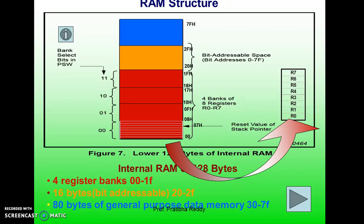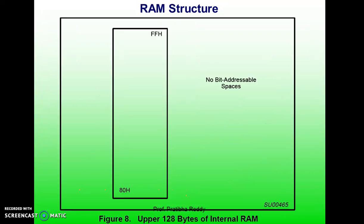In the 8051, the stack pointer points to the last used location of the stack. As data is pushed onto the stack, the stack pointer is incremented by one. Notice that this is different from the 8086 microprocessor, in which the stack pointer is decremented when data is pushed. The stack pointer in the 8051 is 8 bits wide and can take values from 00 to FFh. When powered up, the stack pointer contains value 07h, so RAM location 08h is the first location used for the stack.